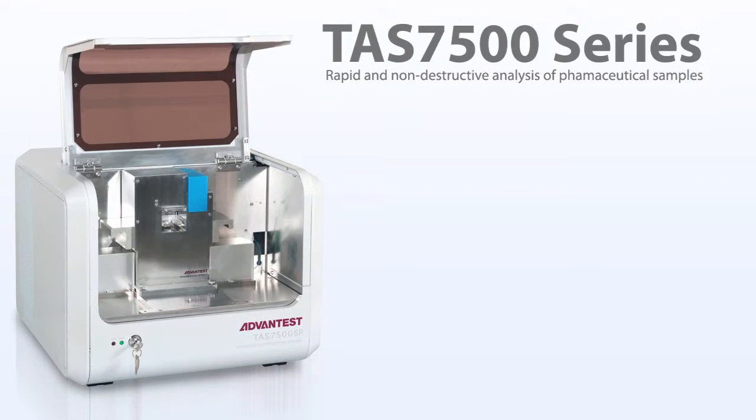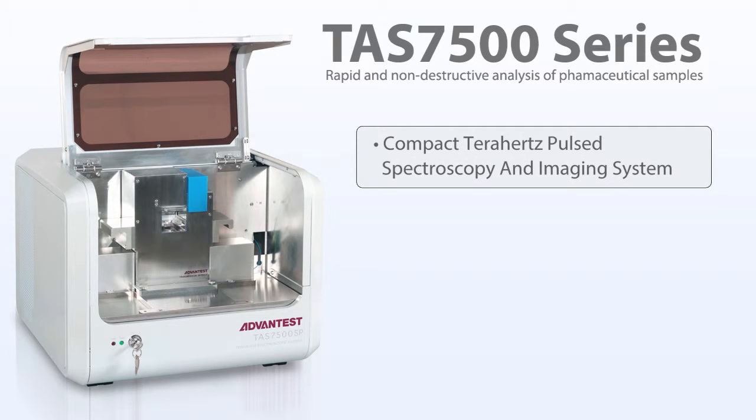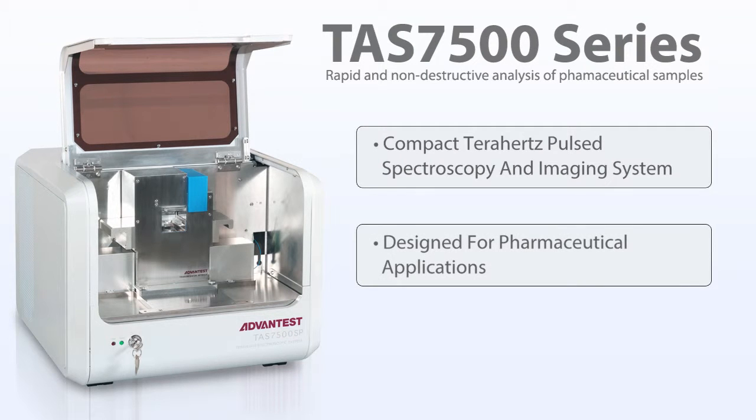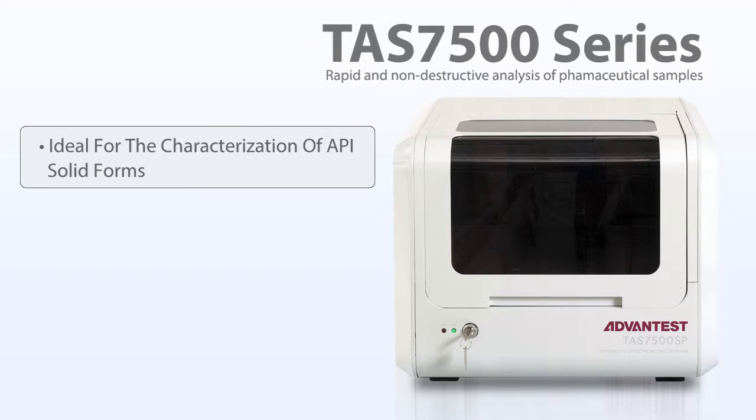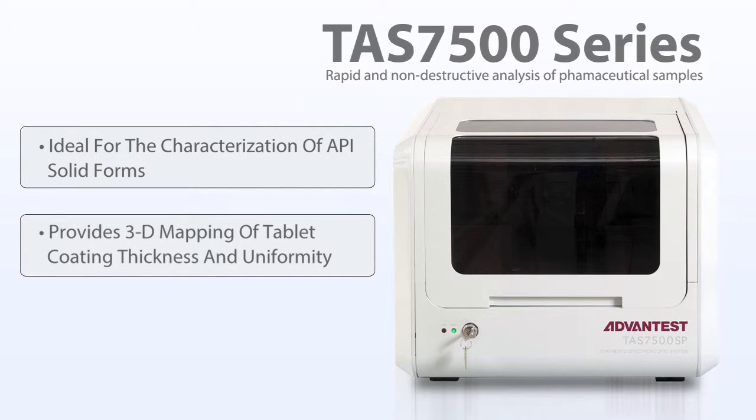The Advantest TAS7500 is a compact terahertz pulsed spectroscopy and imaging system designed for pharmaceutical applications. The spectroscopy unit is ideal for the characterization of API solid forms, while the imaging unit provides 3D mapping of tablet coating thickness and uniformity.